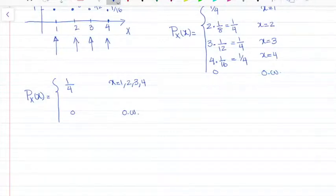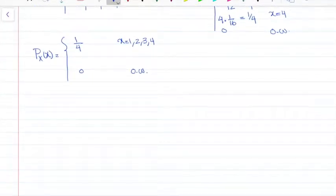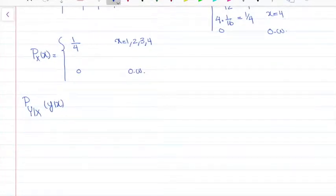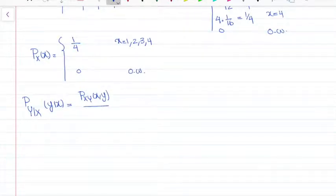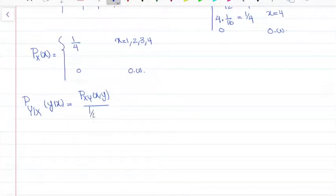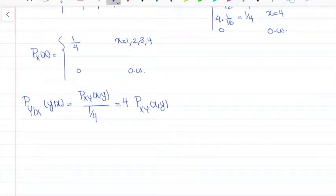Now I need to find P_{Y|X}(y|x). We said it equals P_{XY}(x,y) divided by P_X(x). Since P_X(x) = 1/4 for all valid x, this simplifies to P_{Y|X}(y|x) = 4 · P_{XY}(x,y).